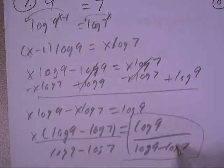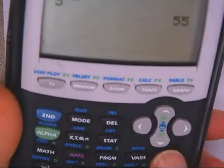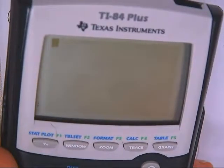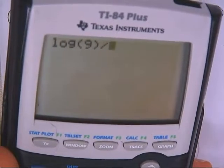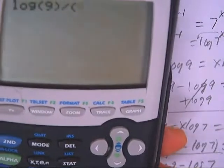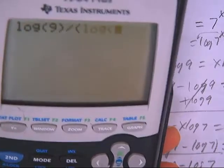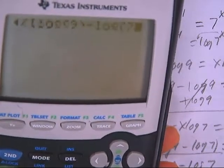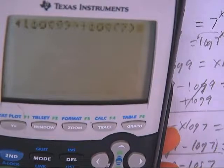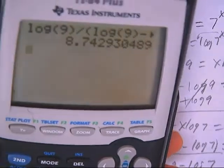Just be careful when you calculate this. You need to do log 9, that's easy. But when you divide, you need to divide by the whole denominator. So enter log 9, close that, subtract log 7, close that, and then close the denominator. That's the answer you'll get.